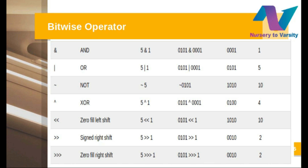The second bitwise operator is OR. In OR, when both inputs are 0 and 0 we get 0; otherwise we always get 1. So 5 OR 1 gives the output 5. Next is negation — the NOT operator. When we perform NOT 5, you take the binary number and take its 1's complement: 1 gets converted to 0 and 0 gets converted to 1. Next is XOR: when we have the same input for both variables — 0,0 or 1,1 — we get output 0. When we have different inputs, we get output 1. So 5 XOR 1 gives output 4.